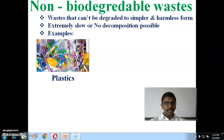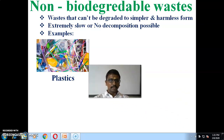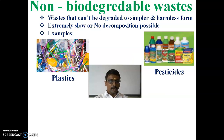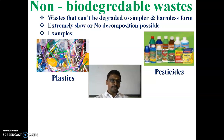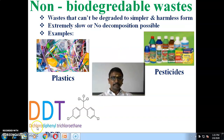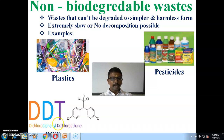Plastics are non-biodegradable. Another example is pesticides. Pesticides are used to control pests and they are used for agriculture purposes. The next example is DDT. The term DDT means dichlorodiphenyl trichloroethane.